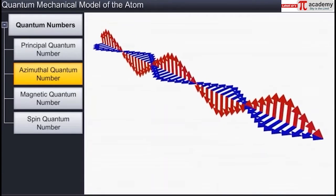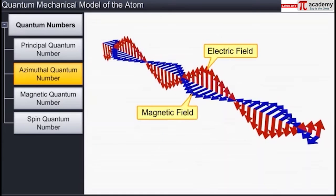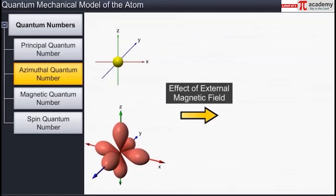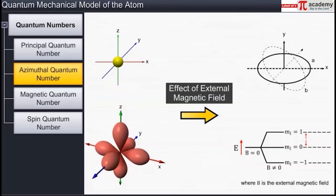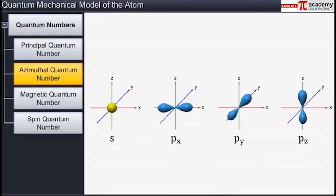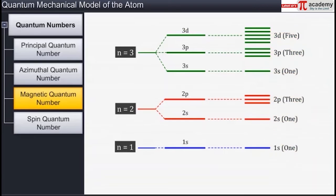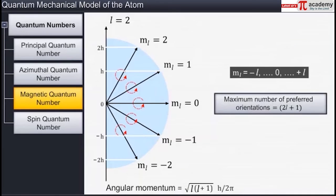An electron moving in a subshell generates an electric field and magnetic field resulting from its motion around the nucleus. Under the influence of an external magnetic field, the electrons moving in the subshells tend to reorient themselves into specific orbitals. The number of preferred orientations of electrons belonging to a subshell is given by another quantum number called the magnetic orbital quantum number ml. Each orientation corresponds to an orbital; therefore, the magnetic quantum number helps determine the number of orbitals within each subshell. For a subshell, there can be a maximum of 2l plus 1 preferred orientations or orbitals, with values ranging from minus l to plus l including 0.